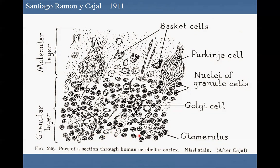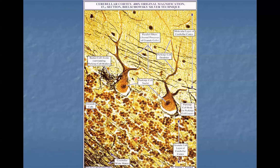Between granular cells are Golgi cells dispersed throughout the granular layer. Cajal also discovered free spaces between granular cells. Later it was discovered that these free areas — the cerebellar islands — contain synaptic contacts, and the term cerebellar glomerulus was also applied to these areas.